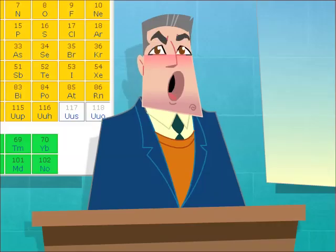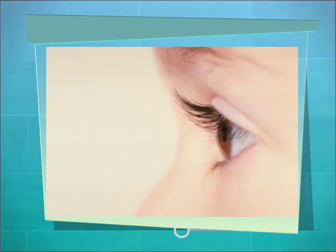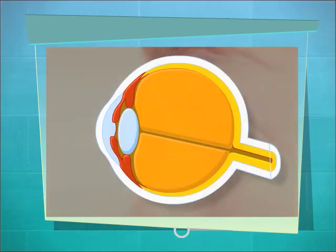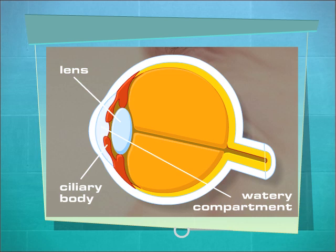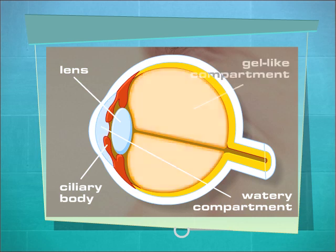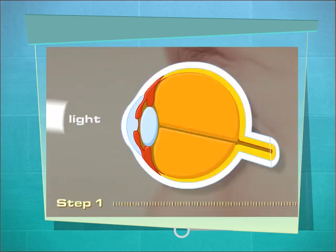Here's how it works. The eye is broken into two compartments that are separated by the lens and the ciliary body: a watery compartment in the front of the eye, and a compartment filled with a gel-like material in the larger rear area of the eye.